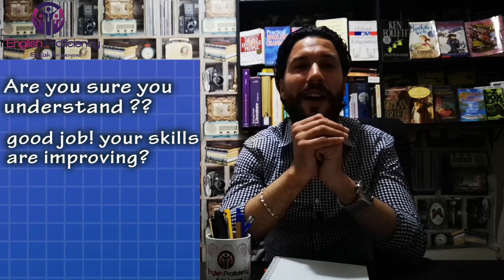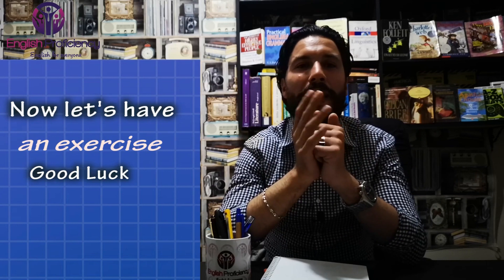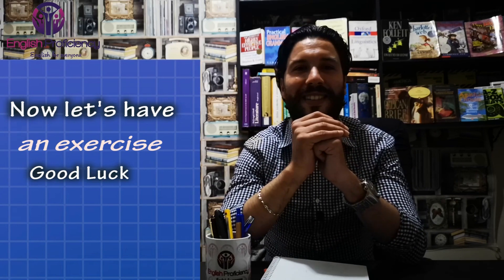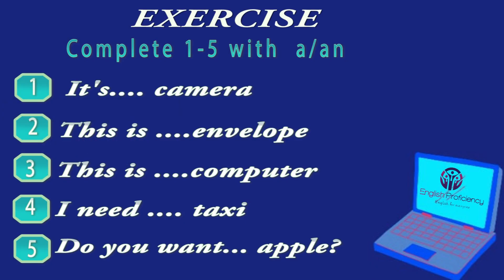This is all about nouns and indefinite articles. Before we come to the end of our session, let's have an exercise together to make sure you understand. Complete numbers one to five with 'a' or 'an'. Number one: it's a camera. Number two: this is an envelope. Number three — you can pause the video to do the exercise.